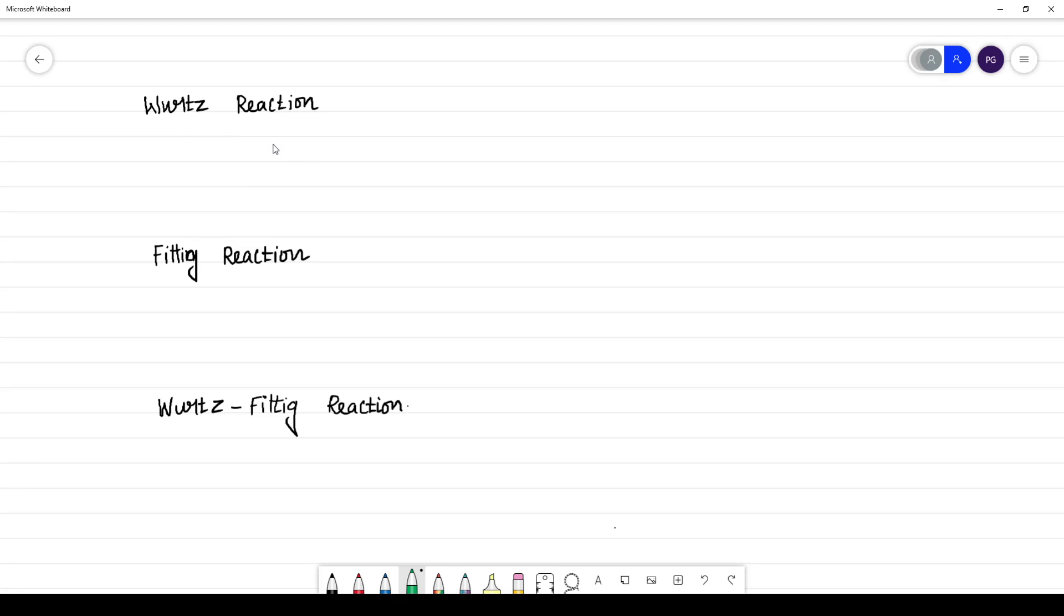What is Wurtz reaction? Wurtz reaction means you will be having two aliphatic compounds. The CH3 is aliphatic, this Cl3 is aliphatic.